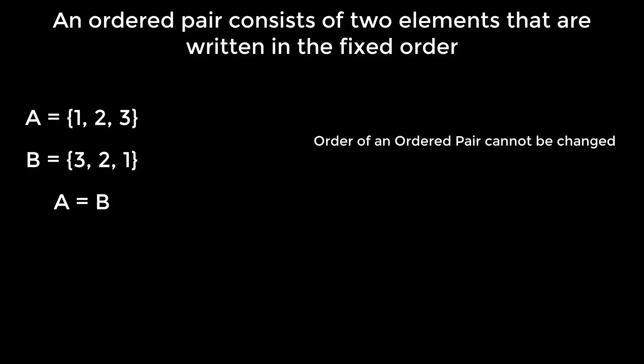Ordered pairs are always enclosed by plain brackets, also known as first brackets. For example, (1, 2) is an ordered pair. This means (1, 2) is not equal to (2, 1).